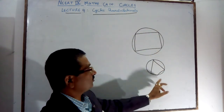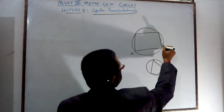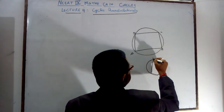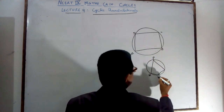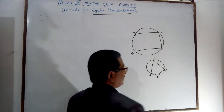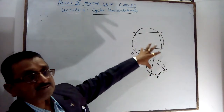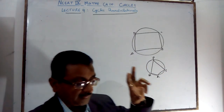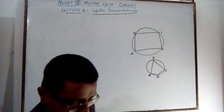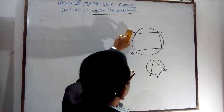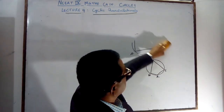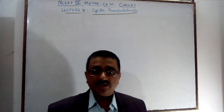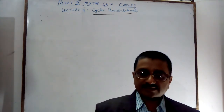The vertices can be labeled A, B, C, D or P, Q, R, S or anything. If all vertices lie on the circle, it is called a Cyclic Quadrilateral. It means a circle is circumscribing the quadrilateral. Circumscribe means it passes through the vertices — that circle which passes through the vertices of the quadrilateral is called the circumscribing circle.